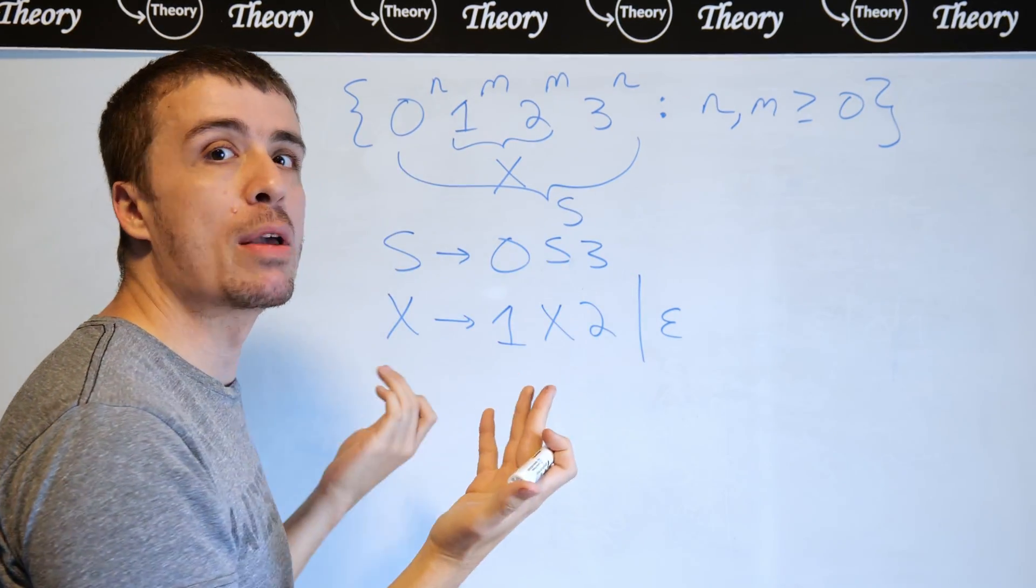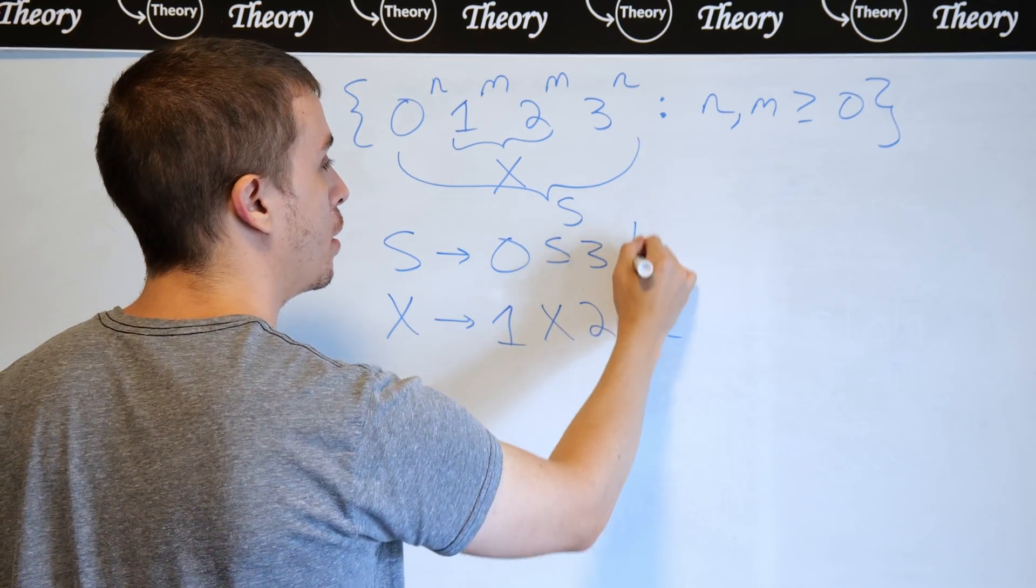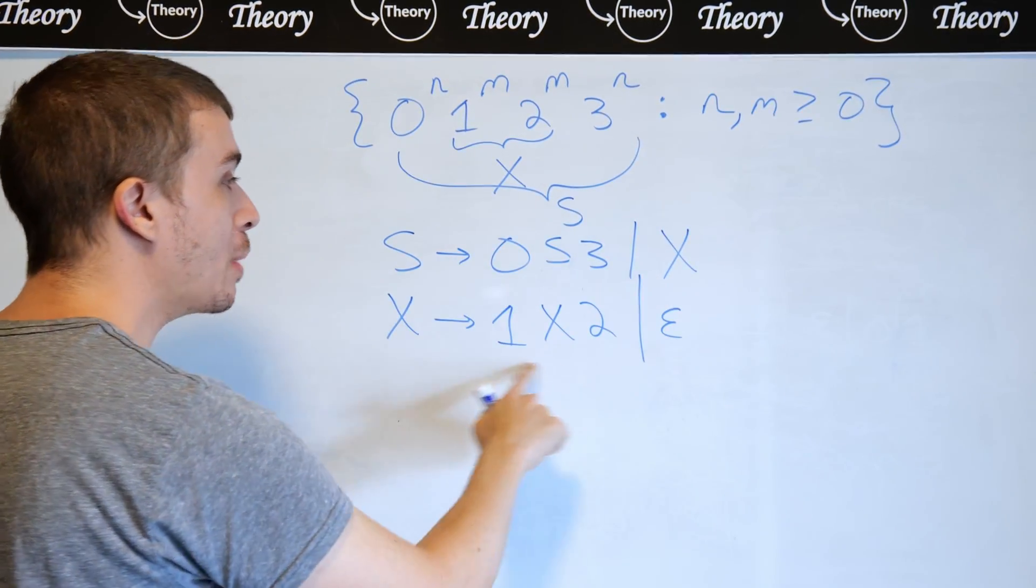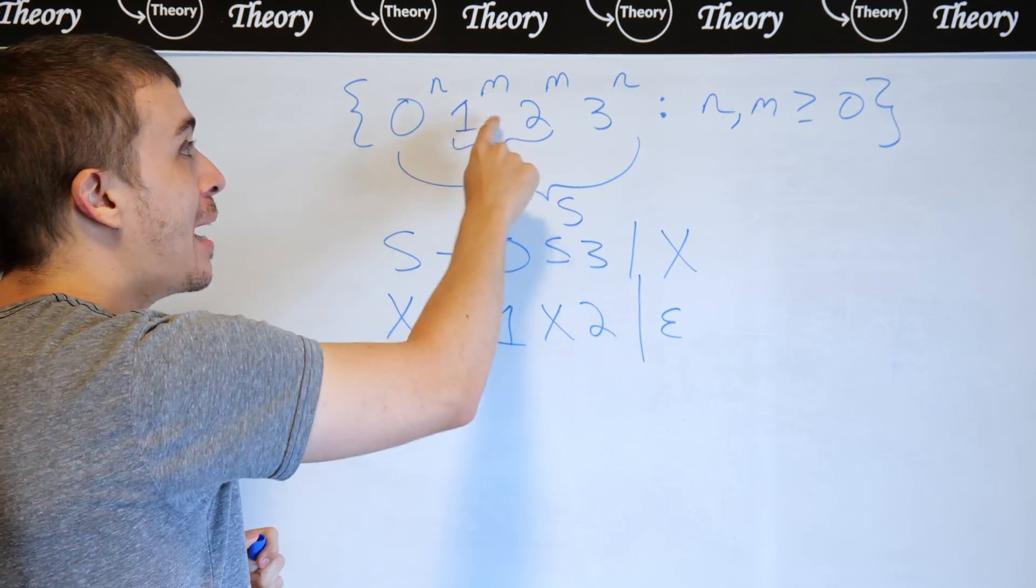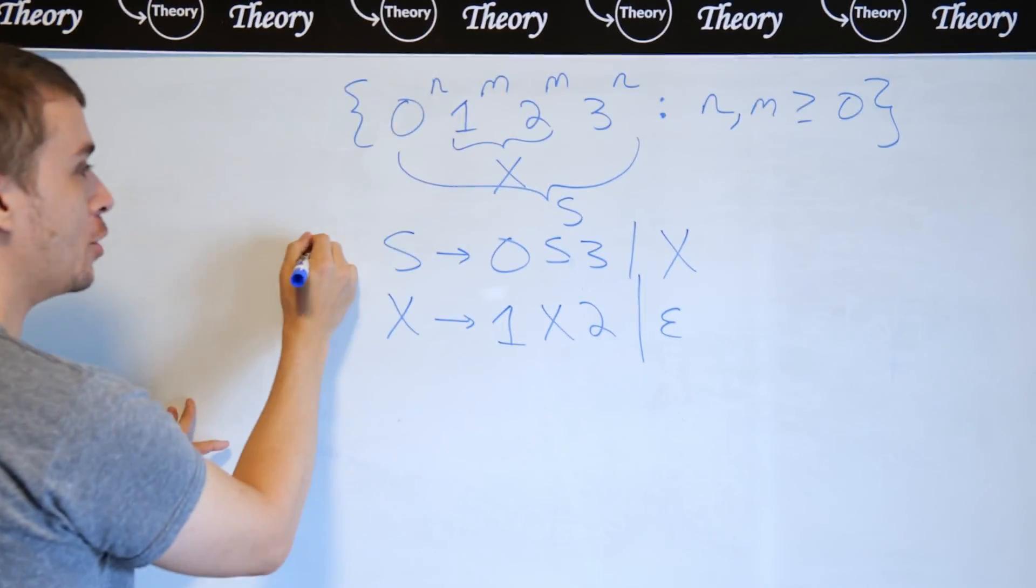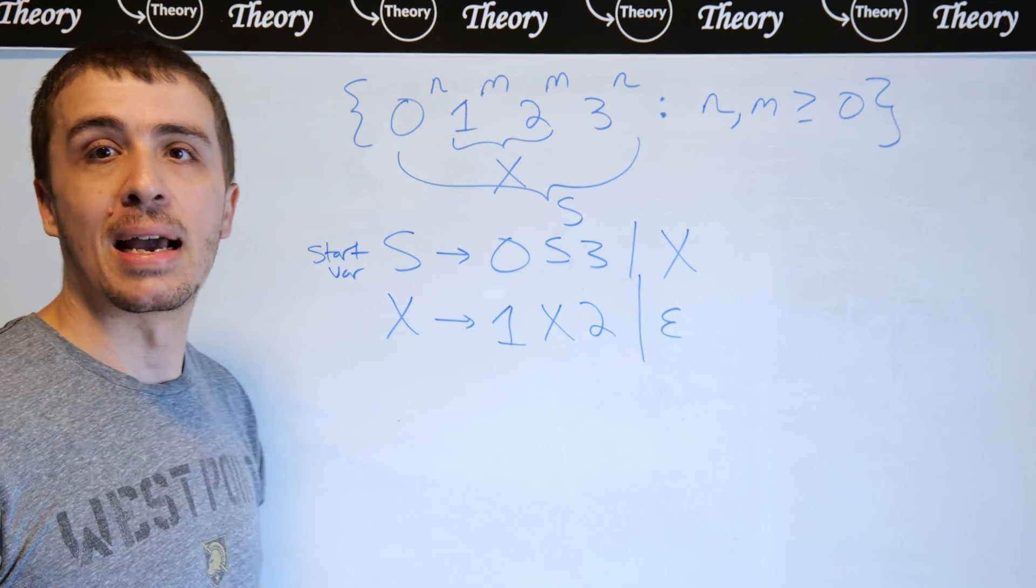And then eventually we want to start making the ones and twos, and that's handled by x here. So I need to be able to switch over and then not have any way of going back up here because I don't have zeros and threes in the middle. And I should also note that this is the start variable and not x.